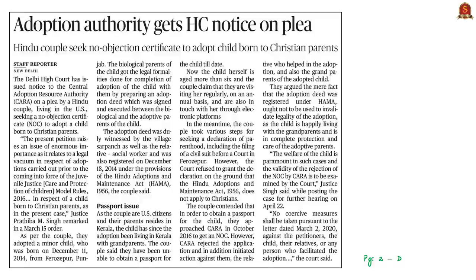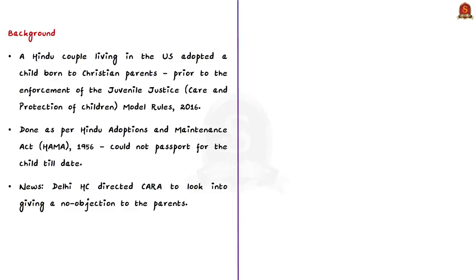The next discussion is based on a news article about a notice issued by the Delhi High Court to the Central Adoption Resource Authority. A Hindu couple living in the USA adopted a child born to Christian parents. This adoption was carried out prior to the enforcement of Juvenile Justice Care and Protection of Children Model Rules of 2016 and under the provisions of the Hindu Adoptions and Maintenance Act of 1956. Despite completing all procedural formalities, the adopted parents could not get a passport for the child.